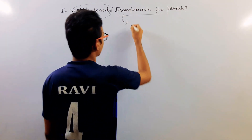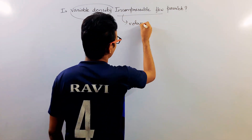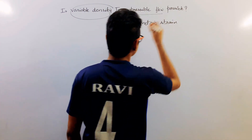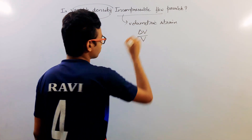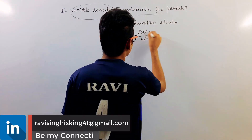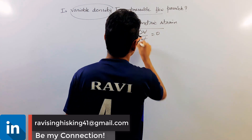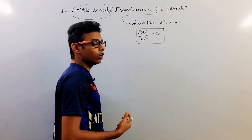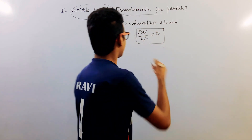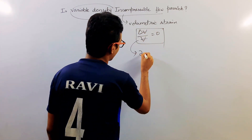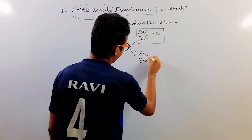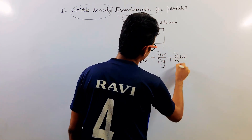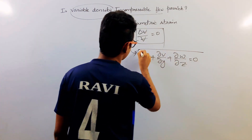A flow for which volumetric strain — that is, change in volume with respect to original volume — is zero, that flow is said to be incompressible flow. We can express it mathematically as: del u by del x plus del v by del y plus del w by del z is equal to zero.